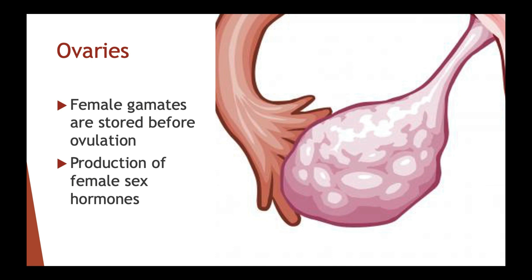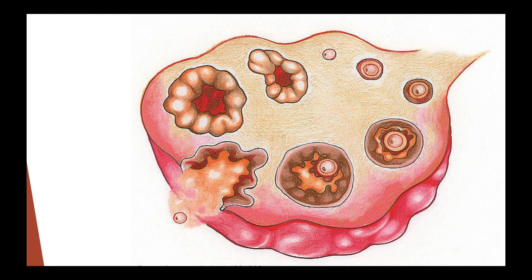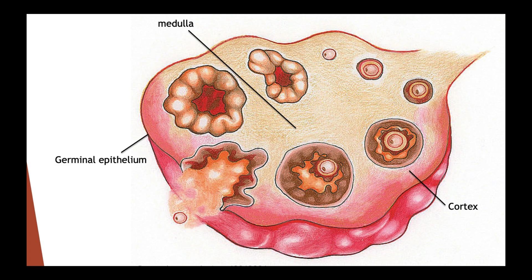Now let's have a look at the cross section of the ovary. The ovary consists of two tissue layers: the outer layer cortex and the inner layer medulla. The outer layer has a connective tissue layer covered by germinal epithelium. The cortex contains ovarian follicles in various stages of maturity. Each of these follicles has an oocyte — a partially developed egg surrounded by support cells which nourish and protect the oocyte.